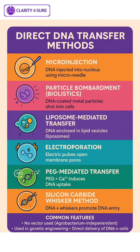Number four is electroporation. High voltage electric pulses are applied to protoplasts to create temporary pores in the membrane, through which DNA enters. It is efficient but only works with protoplasts, not whole cells.